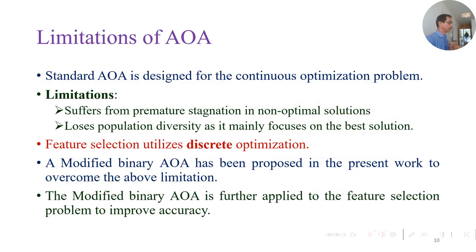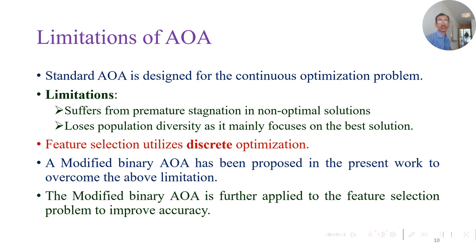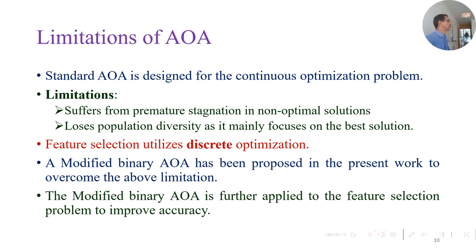However, AOA has certain limitations. First, it is a continuous optimization algorithm, whereas feature selection — selecting M out of N features — is a discrete optimization problem. Second, premature stagnation is possible because exploration and exploitation are not well balanced. Third, population diversity is not ensured, as the algorithm always moves toward the best solution from the first iteration, making it prone to being trapped in local optima. We therefore needed modifications to address discrete optimization and ensure diversity.